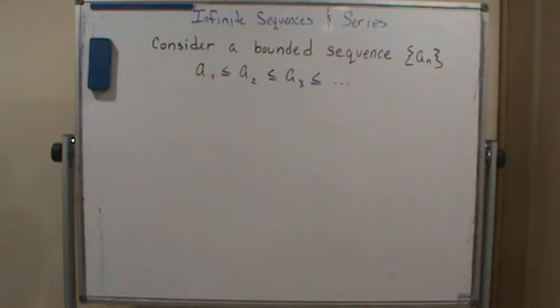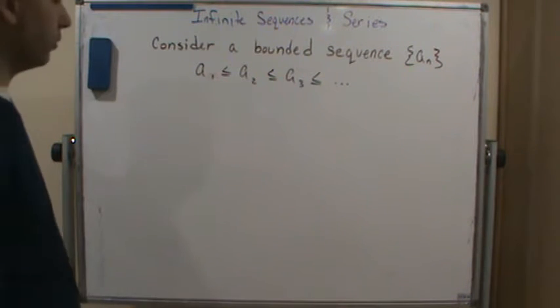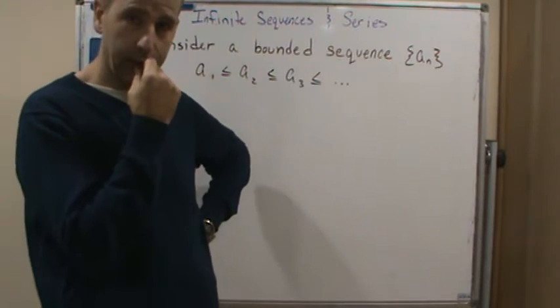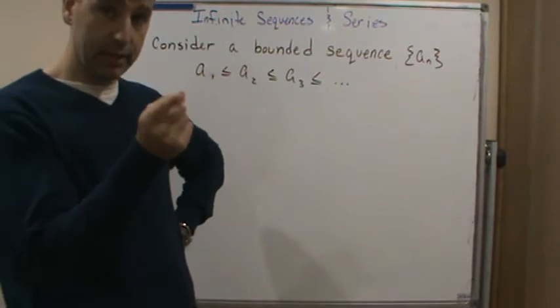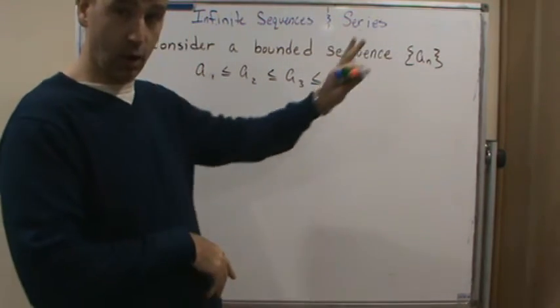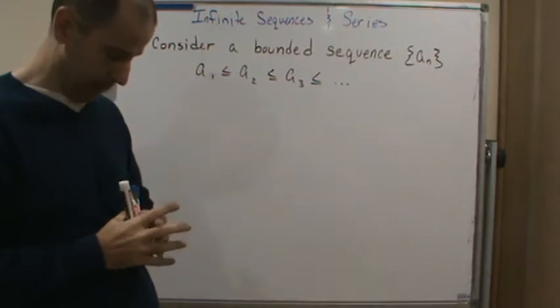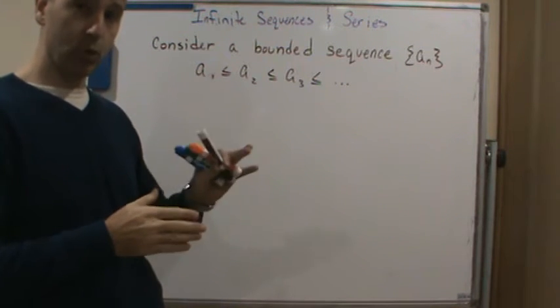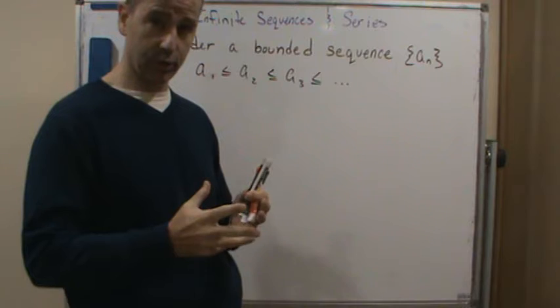And since this sequence is increasing, there are only two possibilities. We could have an increasing sequence that diverges because this thing goes off to infinity, or it could be increasing but approaching a specific value, so it could converge.